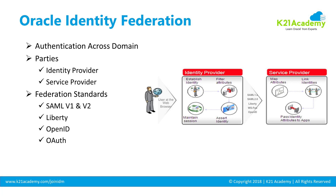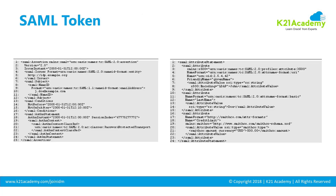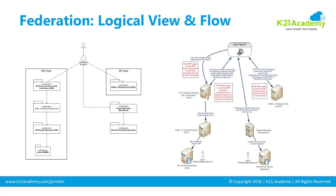Based on that trust, the service provider grants access to the application and retrieves the user's identity from the SAML token. On the left-hand side you can see what a SAML token looks like. Within the SAML token you can define what attributes are sent from the identity provider to the service provider — such as last name, given name, and user ID — all within that XML-based SAML token.